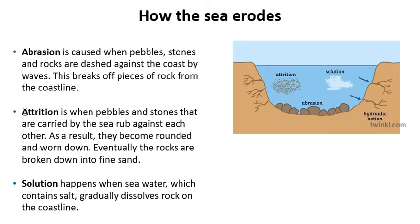Attrition is an interesting one. We've mentioned how waves carry a load — rocks, shells, bits of sediment — that can hit off the coastline. But that sediment can also hit off itself and break itself down. Attrition is when pebbles and stones carried in the sea rub and hit against each other, becoming rounded and worn down. Eventually the rocks are broken down into fine sand. That's how sand is formed — big rocks carried in waves grind each other down into very fine particles that are deposited on a beach.